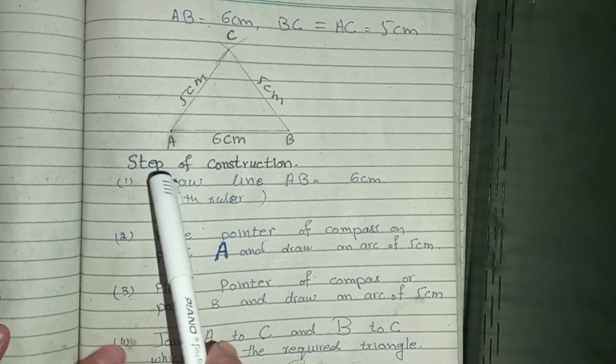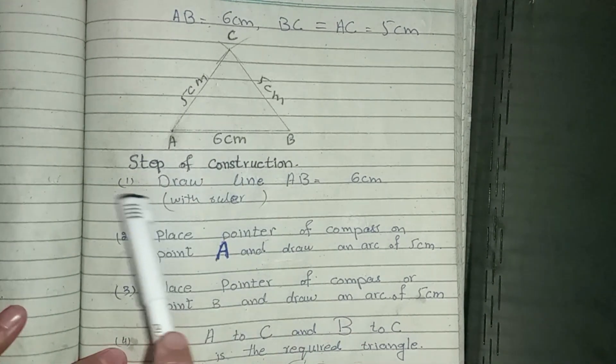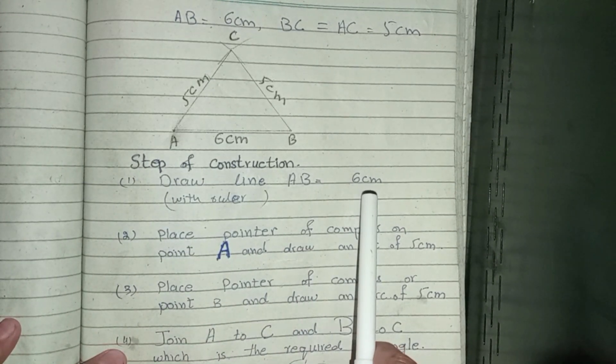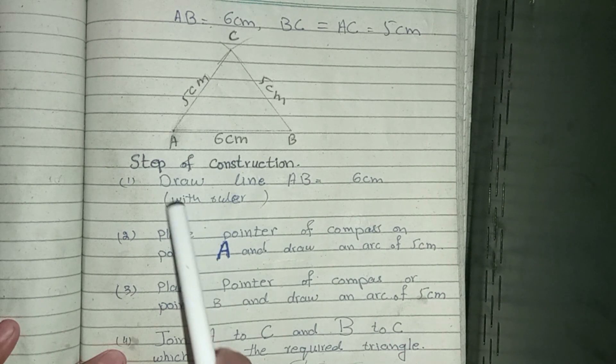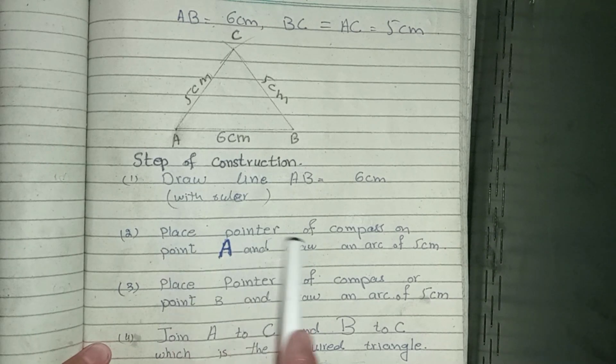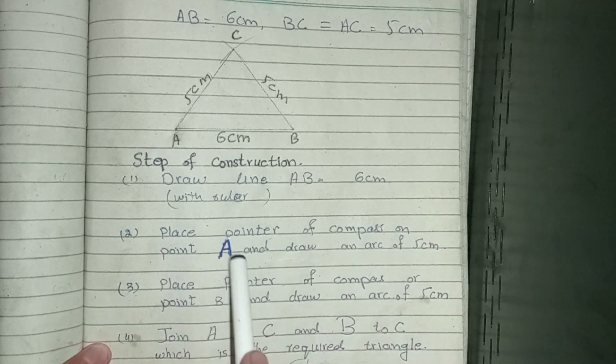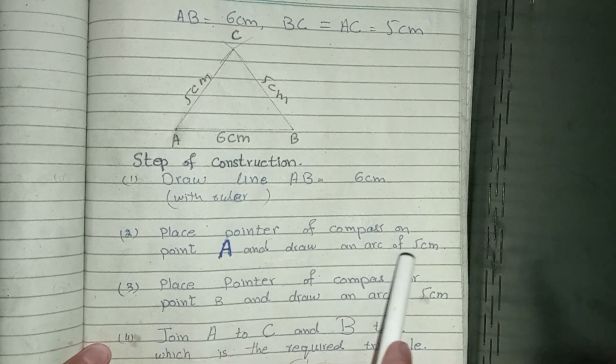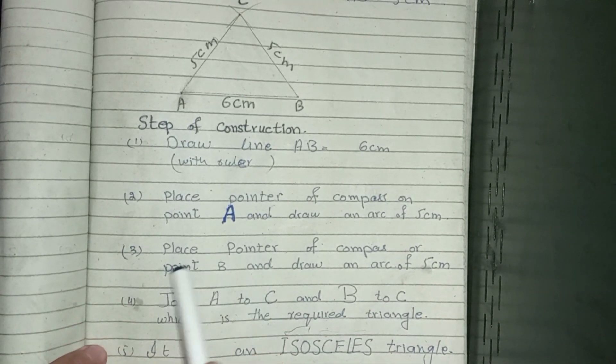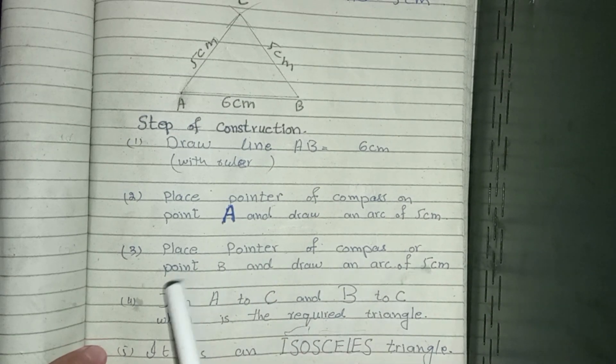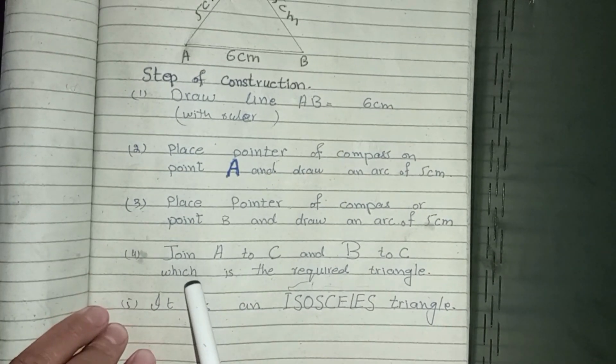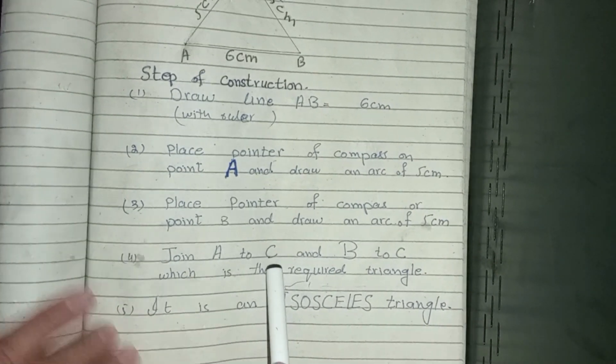Now we have to write the steps of construction. Step 1: Draw line AB equals 6 cm with a ruler. Step 2: Place the pointer of the compass on point A and draw an arc of 5 cm. Step 3: Place the pointer of compass on point B and draw an arc of 5 cm. Step 4: Join A to C and B to C, which is the required triangle.